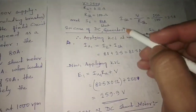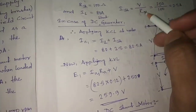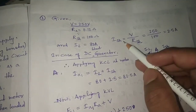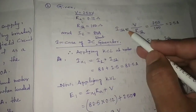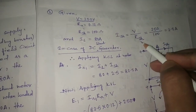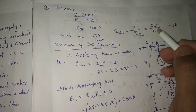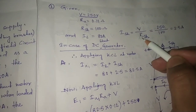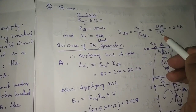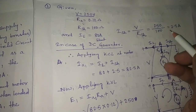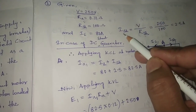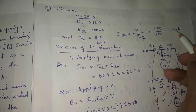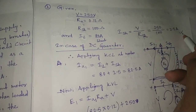We will first solve the generator case. Field current Ish equals V divided by field resistance, which is 250 divided by 100, giving field current as 2.5 amperes.